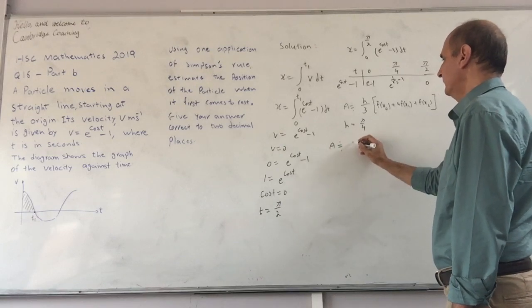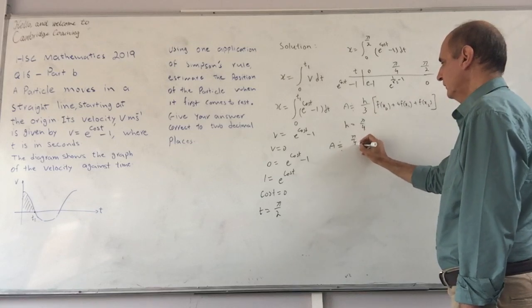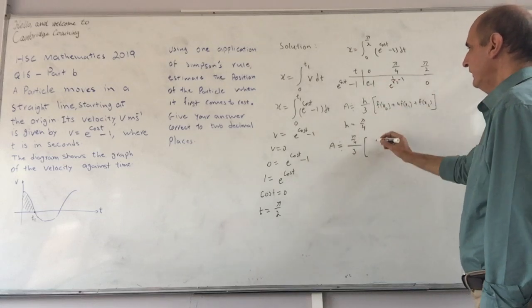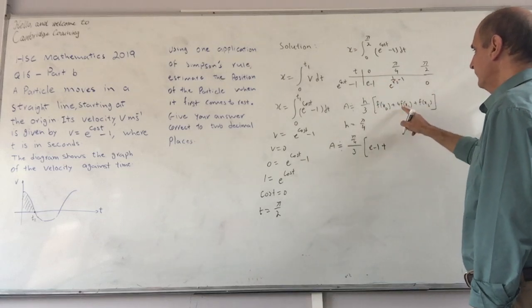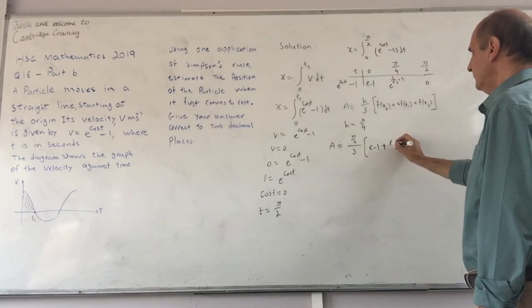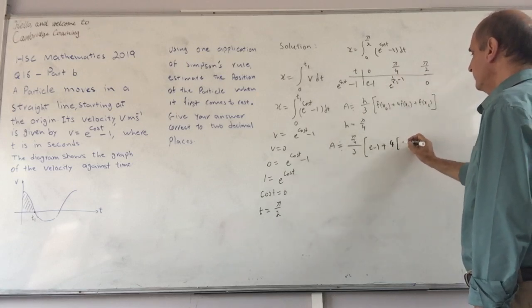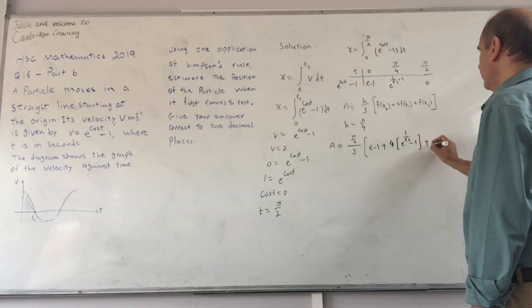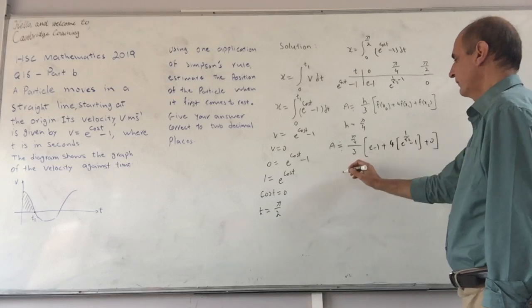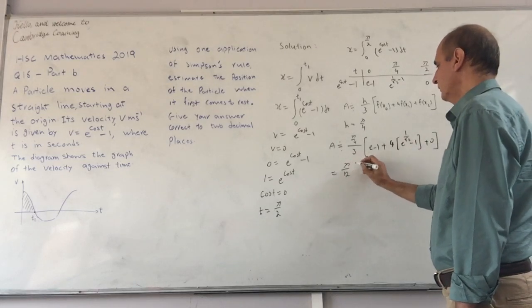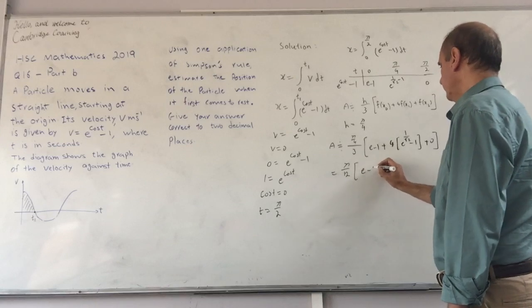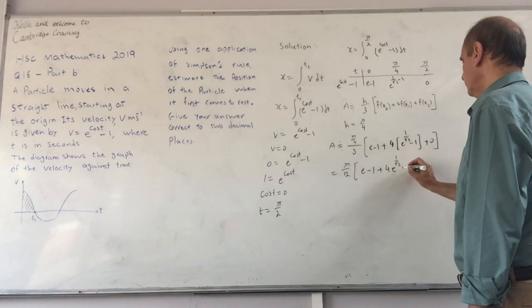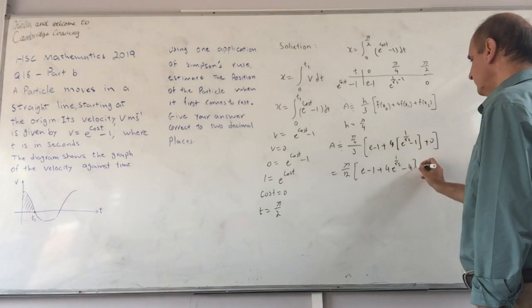So now my displacement will be approximately equal to h, which is π/4 divided by 3, times f(x0), which is e minus 1, plus 4 times e to the 1/√2 minus 1, plus f(x2), which is 0. That becomes π/12 times (e minus 1 plus 4e to the 1/√2 minus 4).